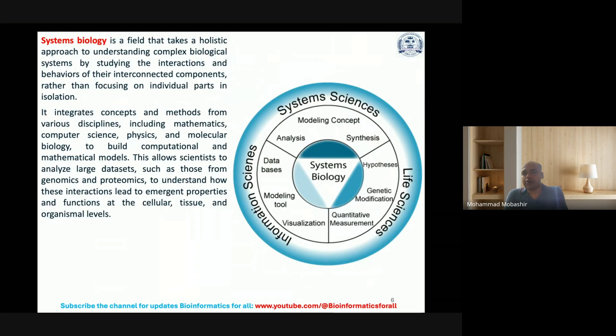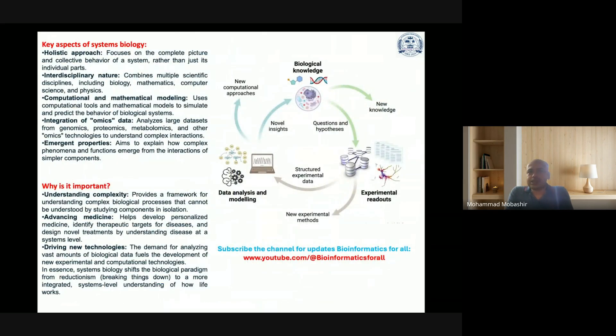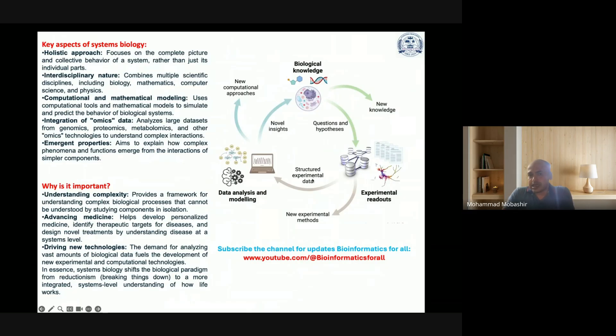Key concepts of systems biology include holistic approach, interdisciplinary nature, computational and mathematical modeling, integration of omics data, and emergent properties. It's important for understanding complexity, advancing medicine, and driving new technologies. The figure on the right side represents key aspects like biological knowledge, experimental readouts, data analysis and modeling, showing questions and hypotheses, structural experimental data, and novel insights.